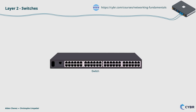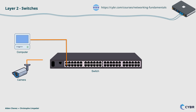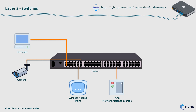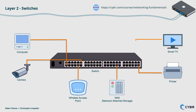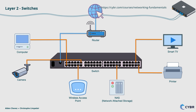What kinds of devices can connect to switches? Well, there are many different kinds, like your computer, your IP cameras — which are simply cameras that connect to your network — even wireless access points, which are used to extend the range or capacity of WiFi. We've got TVs, printers, storage devices, etc. Then one of the switch's ports will connect to a router, which then connects to the internet.